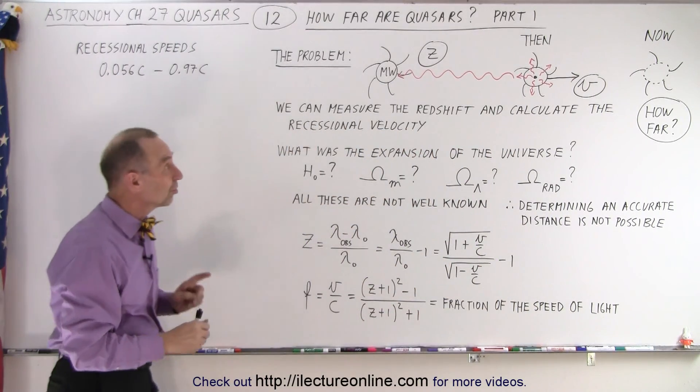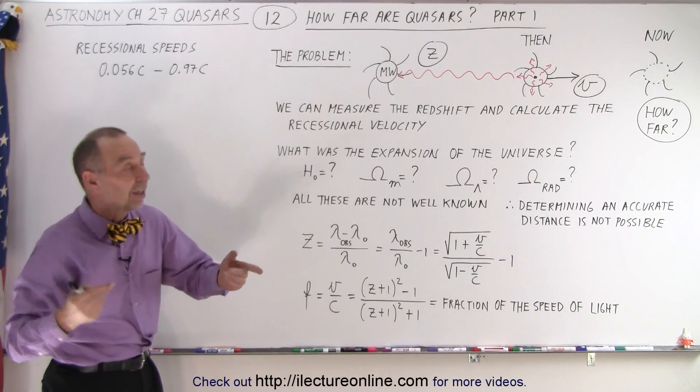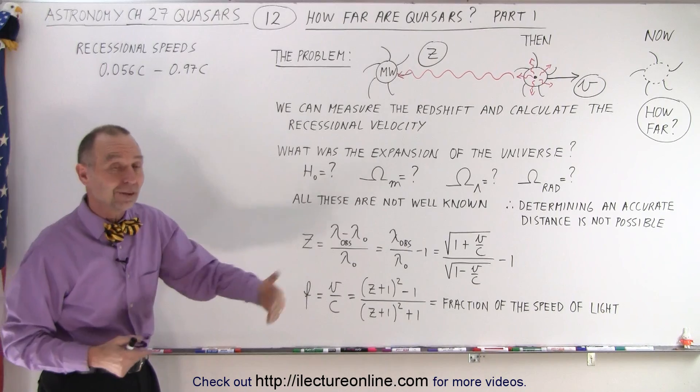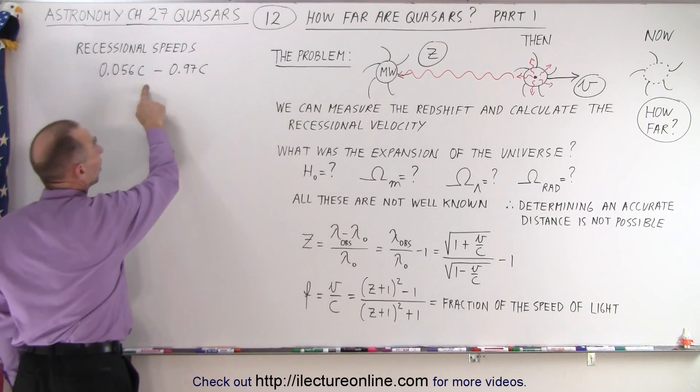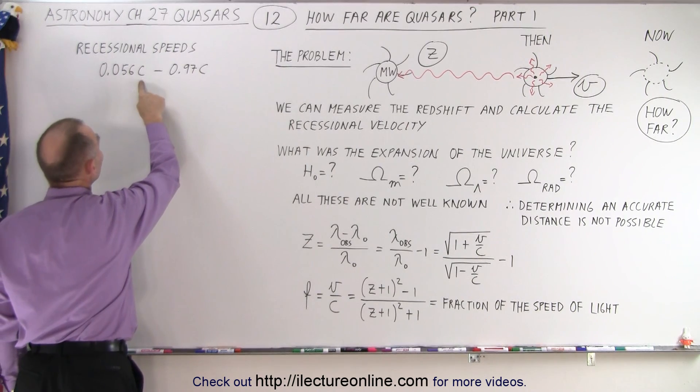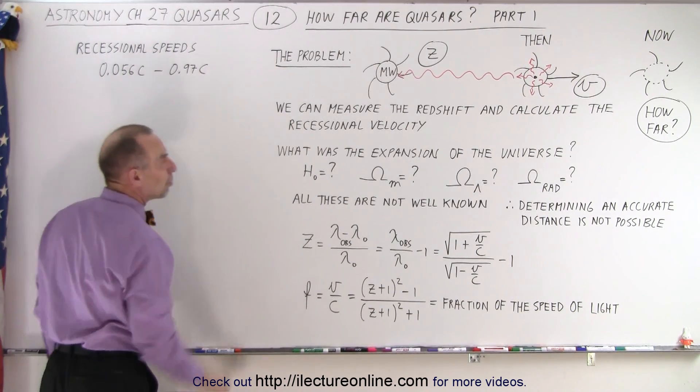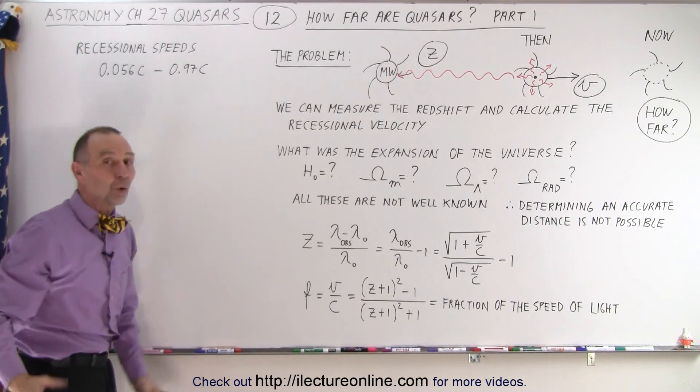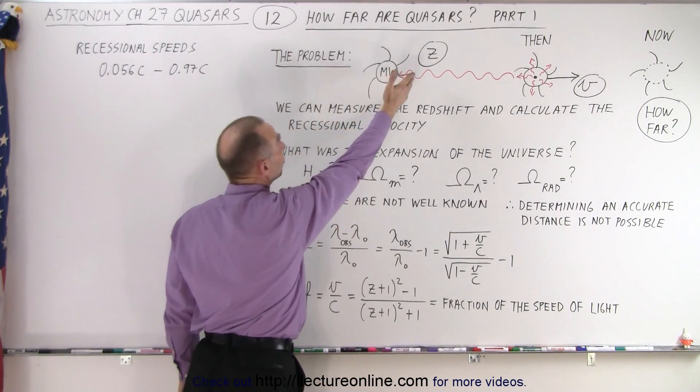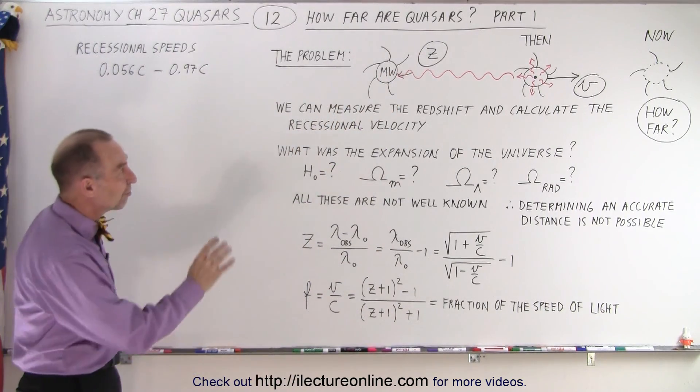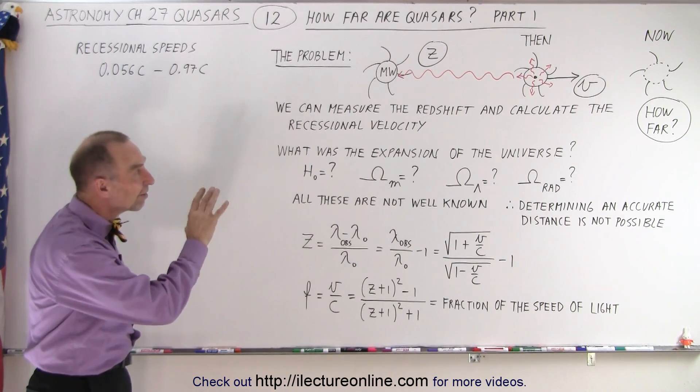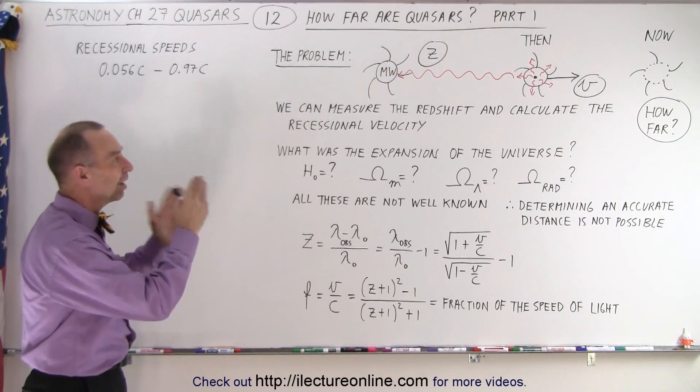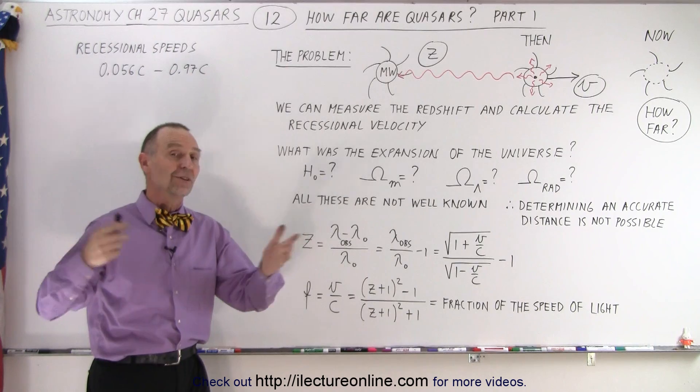And that is why often you will see things such as quasars and their distances expressed in terms of z or expressed in terms of v, the fraction of the speed of light. For example, distances of quasars vary from 0.056c to 0.97c, actually a little bit more than 0.97c. And so that is distance expressed in terms of the recessional speeds, or we can express distance in terms of the redshift. And the redshift will be from a fraction of one to about seven point something. And so again, we express the distance in terms of z or the distance in terms of v rather than the actual distance which is very difficult to calculate.